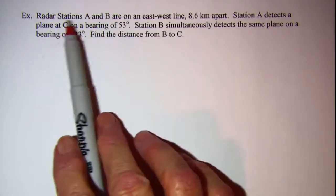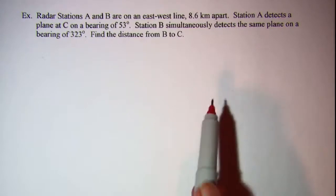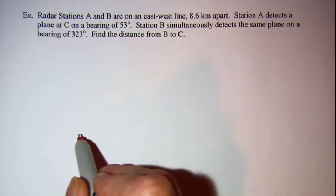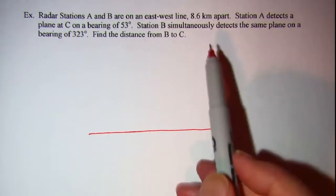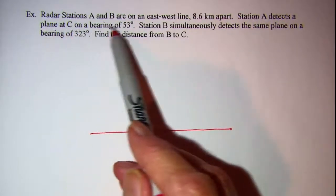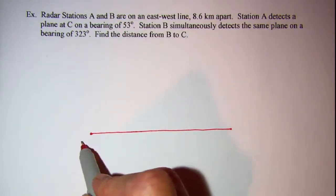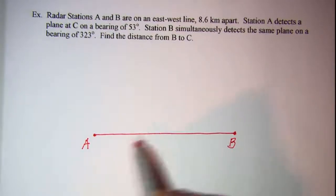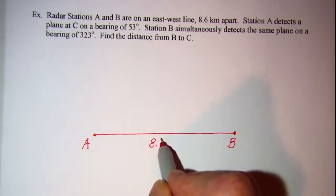So we would start with this first sentence. Radar stations A and B are on an east-west line 8.6 kilometers apart. Since A detects a plane at a bearing of 53 degrees, I'm going to put A here on this point and then B at this point and the distance between the two is 8.6 kilometers apart.